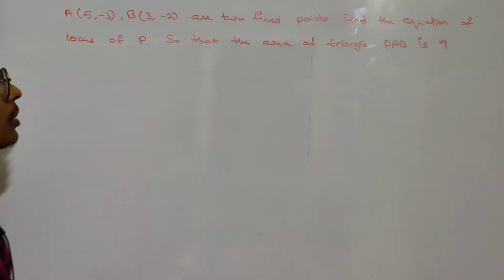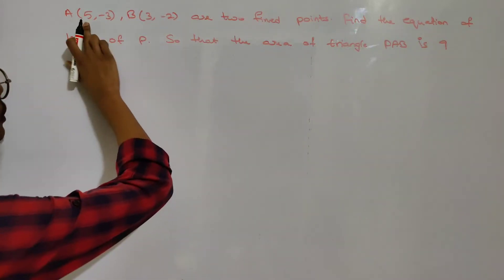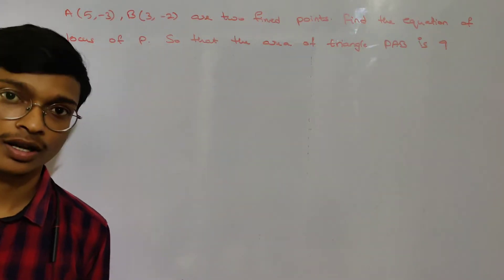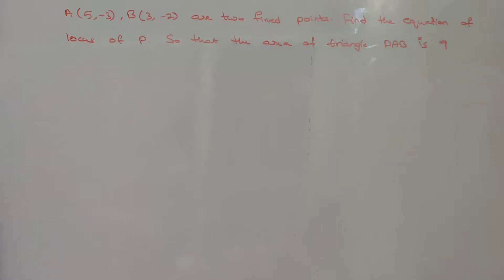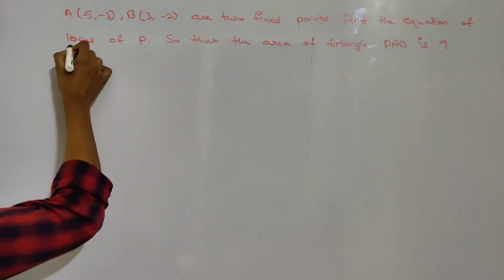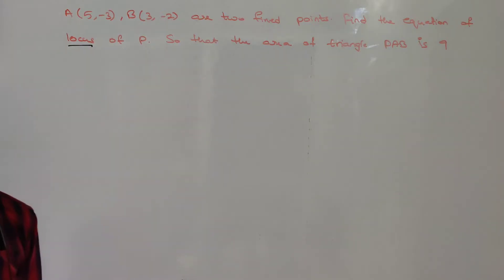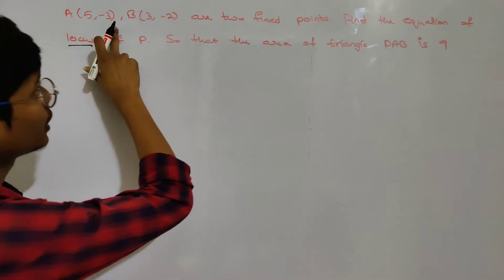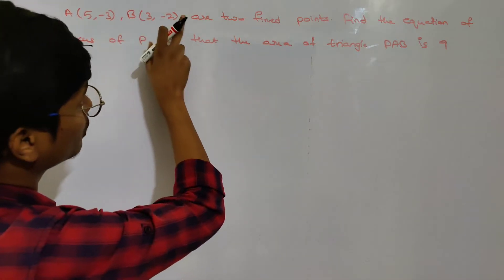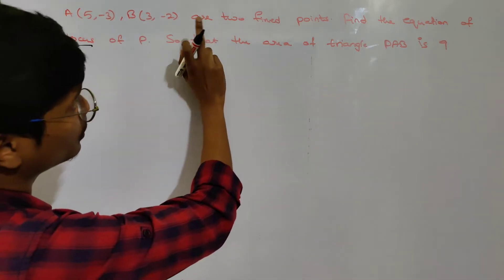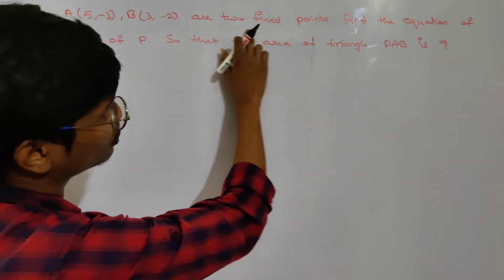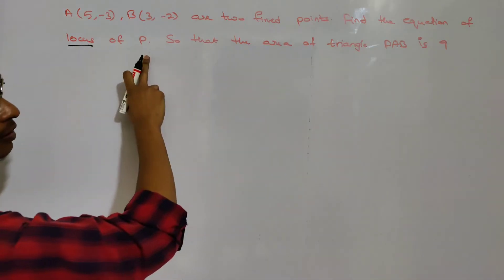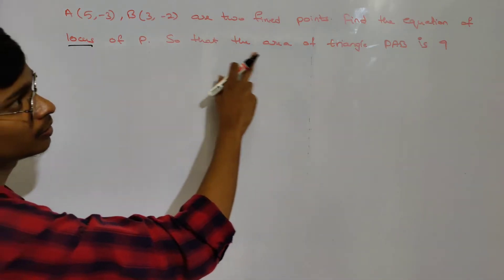Let's start with the locus problem. The question involves finding the locus of point P, given fixed points A(5, -3) and B(3, -2). Find the equation of the locus of P.